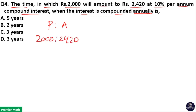Simplify the ratio: cancel the zeros, then divide by 2 to get 100 : 121. Now write this in terms of powers — 10² : 11².